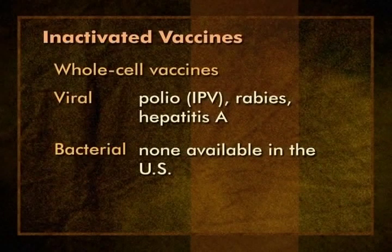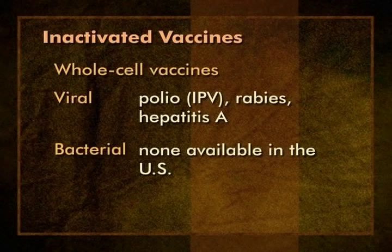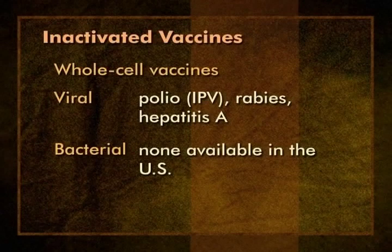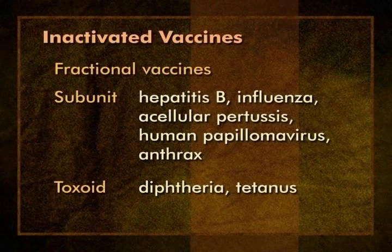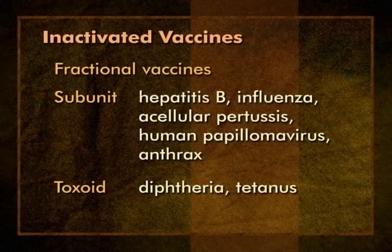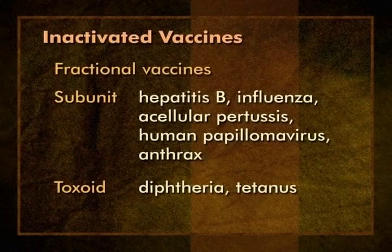Inactivated whole virus vaccines available in the U.S. include inactivated polio, rabies, and hepatitis A vaccines. Inactivated whole-cell bacteria vaccines, such as cholera and whole-cell pertussis vaccine, are available in some countries, but none are available in the United States. Here is a list of fractional vaccines which contain only parts of a virus or bacterium. Subunit vaccines include hepatitis B, influenza, acellular pertussis, human papillomavirus, and anthrax. There are two toxoids: inactivated toxins of diphtheria and tetanus. Acellular pertussis vaccines could be classified as toxoids as well. We will talk about pertussis vaccines in the second session of the course.